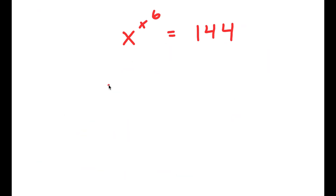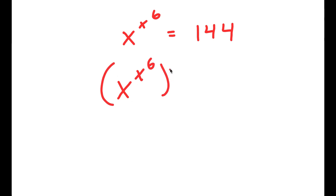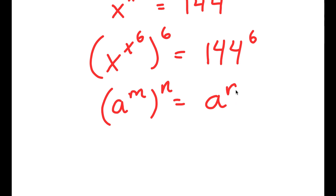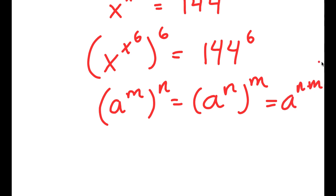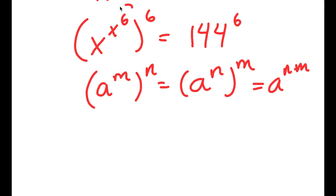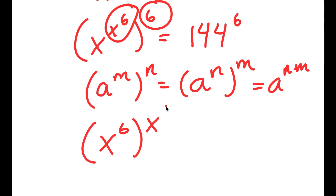So n equals 4 is my solution. In this next problem, I have x to the power of x to the power of 6 is equal to 144. To solve this, I'm going to start by taking both sides to the power of 6. Using the property that a to the power of m to the power of n equals a to the power of n to the power of m, I can switch the exponents: x to the power of x to the power of 6, all to the power of 6, becomes x to the power of 6 to the power of x, all to the power of 6, is equal to 144 to the power of 6.